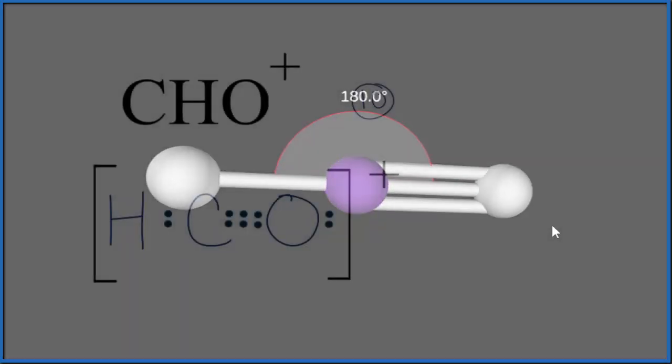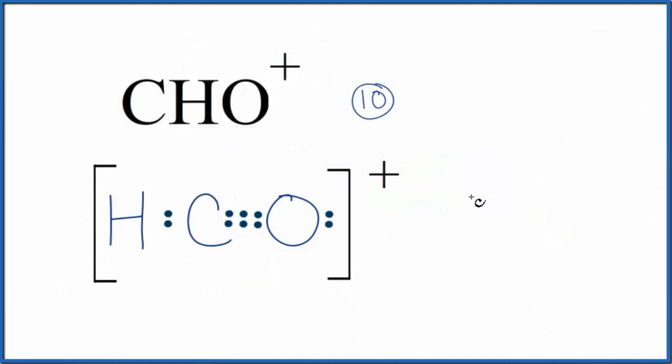Back to our Lewis structure, we have that linear molecular geometry. We could also use the AXE notation to figure out the geometry. A is the central carbon, X, the number of atoms bonded, there are 1, 2, E is the number of lone pairs, and there aren't any lone pairs. So if you look up AX2, you'd find that this is a linear molecular geometry, bond angle 180 degrees.